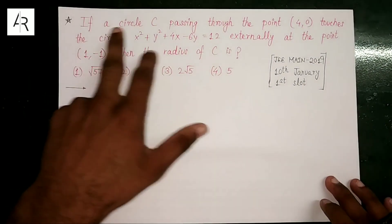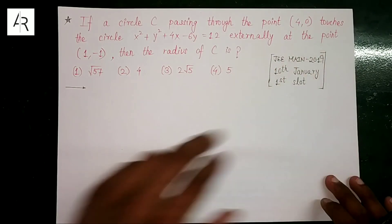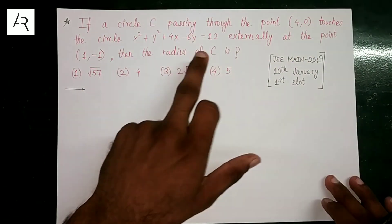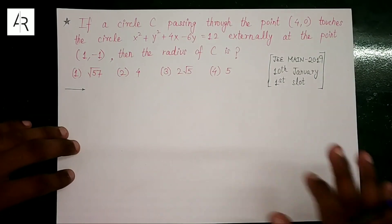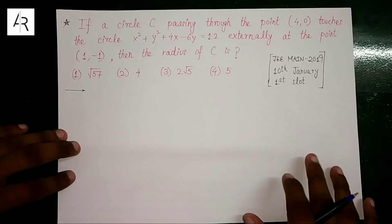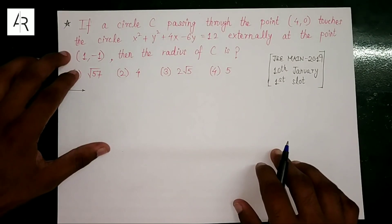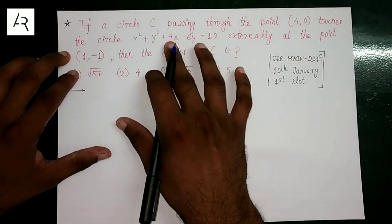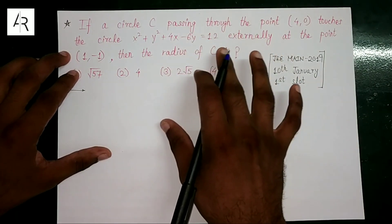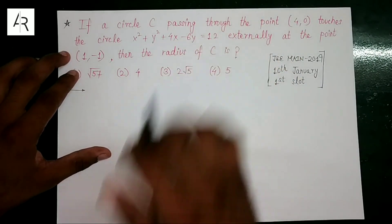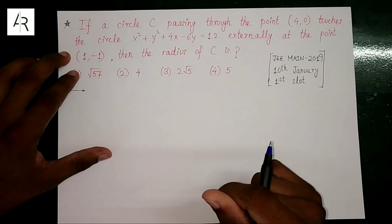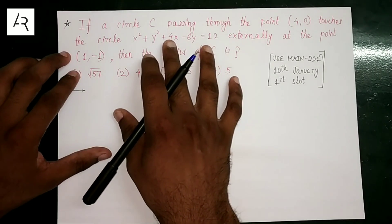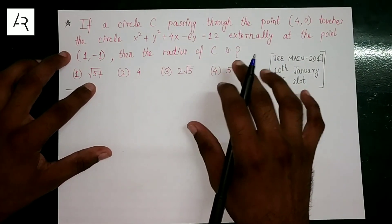Let's look at the first question: a circle C passes through the point (4, 0) and touches a circle externally at the point (1, −1). Find the radius of C. Here is our trick — we have to solve it the actual way. What is your given circle? Its center is (−2, 3) and the radius is root of (2² + 3² − (−12)) = root of 25 = 5. You have to find the center and radius clearly.